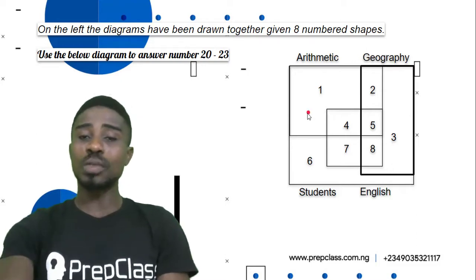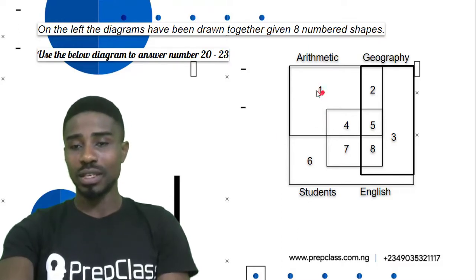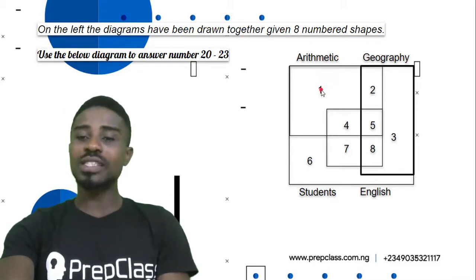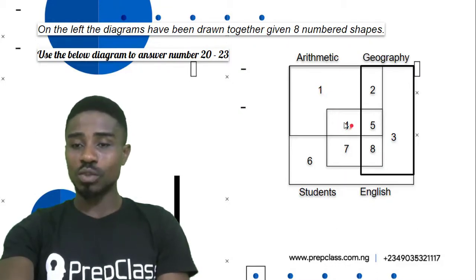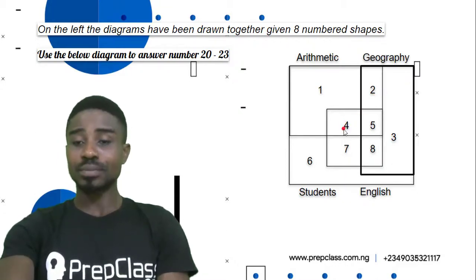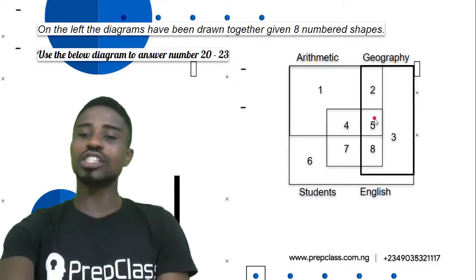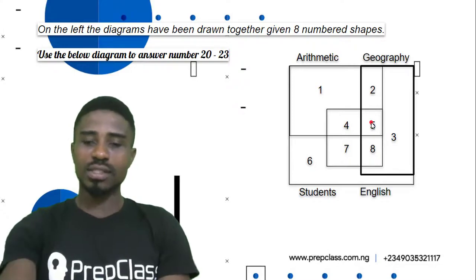For instance, students who took only arithmetic would be region 1, because 1 is for only arithmetic. Arithmetic and other subjects would be 4, 5, and 2 — where 2 is arithmetic and geography, 4 is arithmetic and English, and 5 is arithmetic, English and geography. So with this we are going to be solving questions 20 to 23.